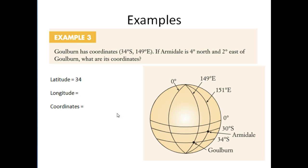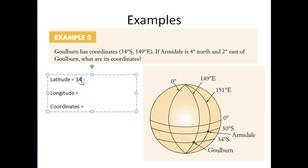Example two. Goulburn has coordinates of 34 degrees south and 149 degrees east. If Armadale is 4 degrees north and 2 degrees east of Goulburn, what are its coordinates? The first thing we need to do is find the latitude and the longitude, and then we can write the coordinates out.